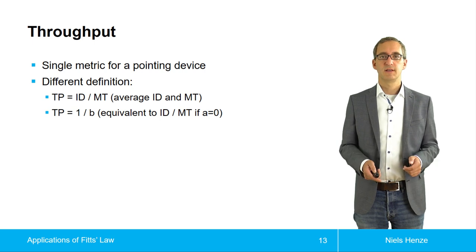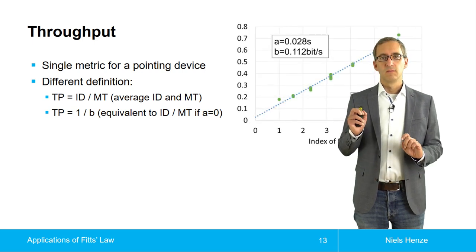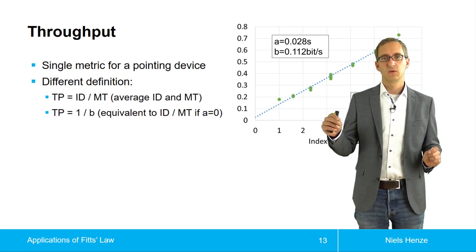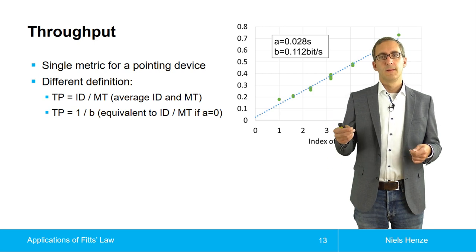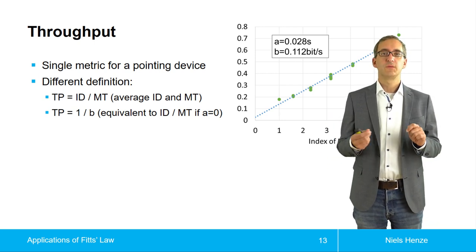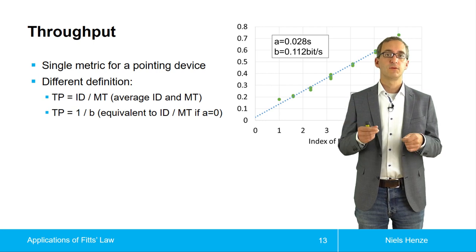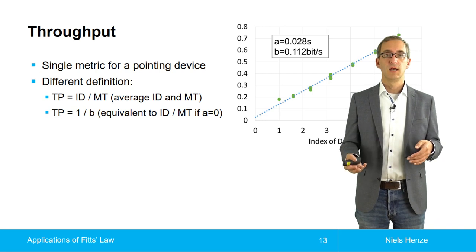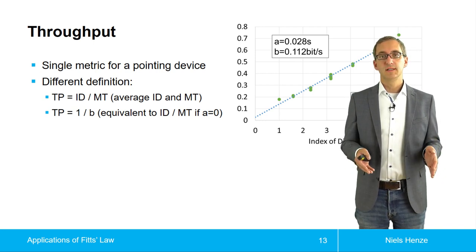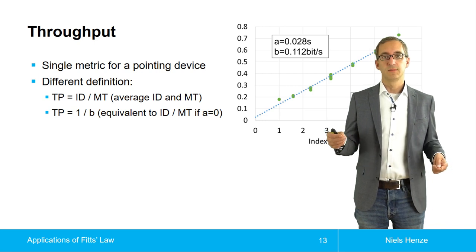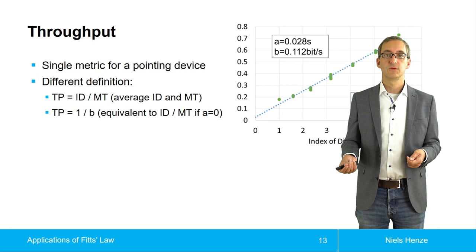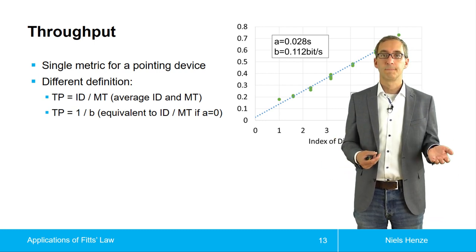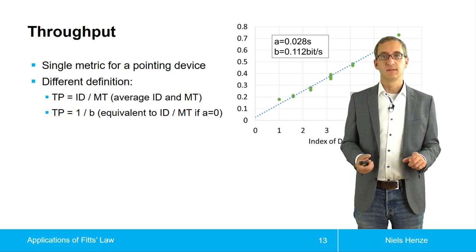If we have two different input devices, we could test all kinds of different combinations of size and distance. But this would only make sense if we didn't know about the linear relationship, since it could be that one input device is better for very small targets and another for very large targets. But as long as the index of difficulty stays the same, Fitts' law tells us that this is not the case — if the index of difficulty is the same, the movement time should be the same.